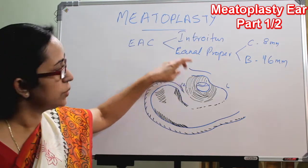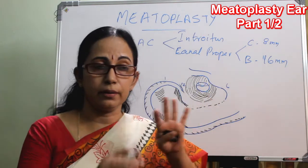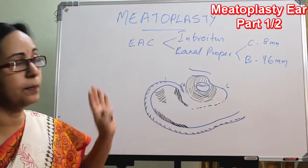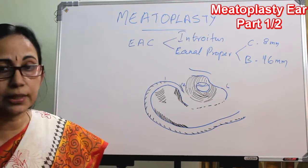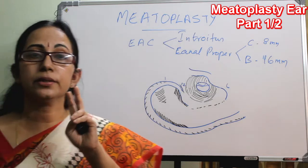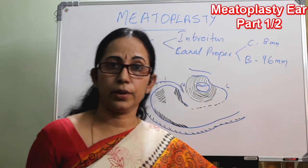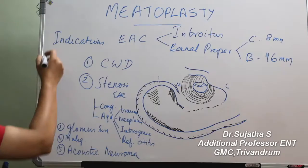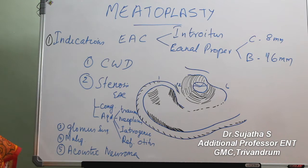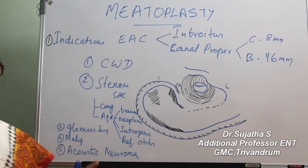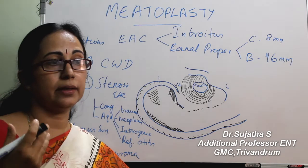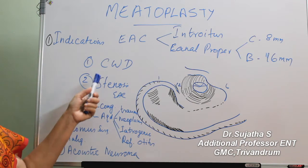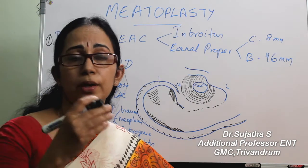Plastic repair or procedures done on the external auditory canal are called canalplasty. There are mainly two indications for canalplasty. Number one is as an end procedure of a canal wall down mastoidectomy.